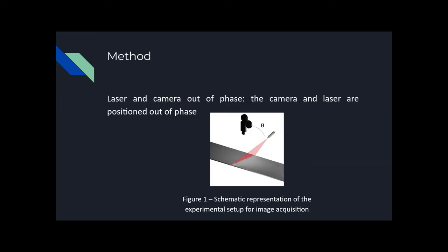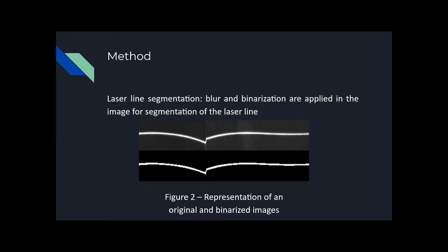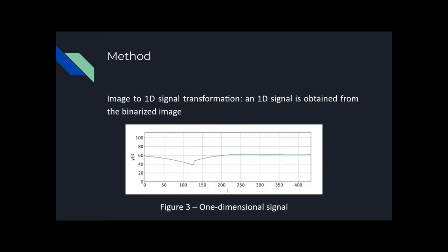First, the laser line has to be out of phase of the camera. Such configuration changes the way that the laser line appears in the image, highlighting the deformation caused by defects. The captured image is pre-processed with computer vision techniques, and after this operation, we transform the image into a 1D signal.